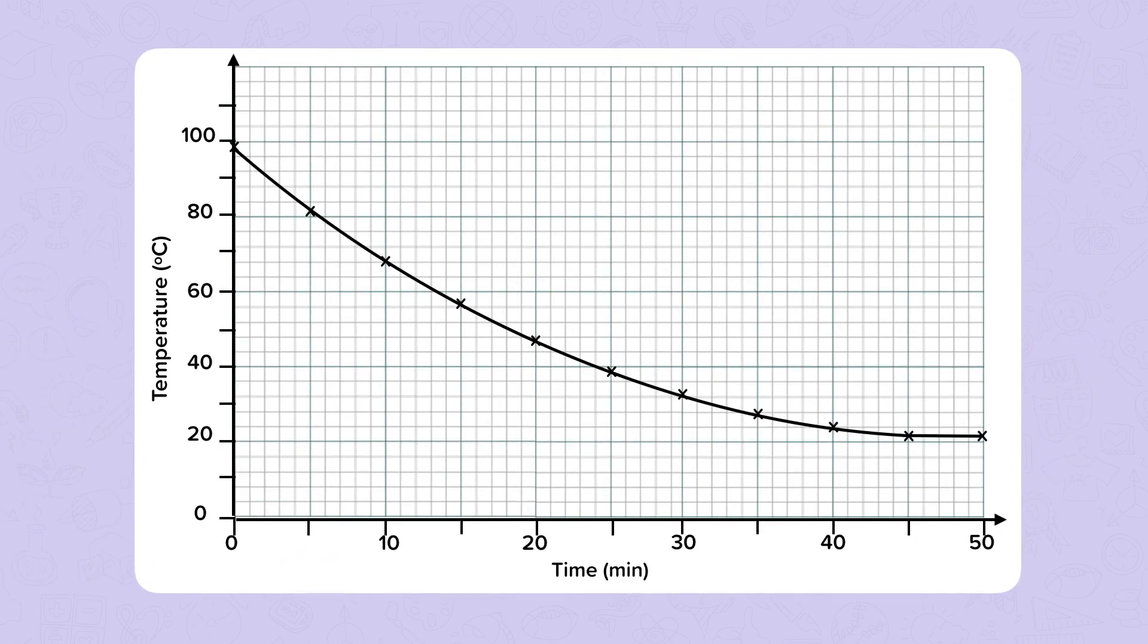So what's happened? At the start our beaker cooled very quickly. Heat is transferred faster if there's a larger temperature difference. The gradient of the slope is steep.